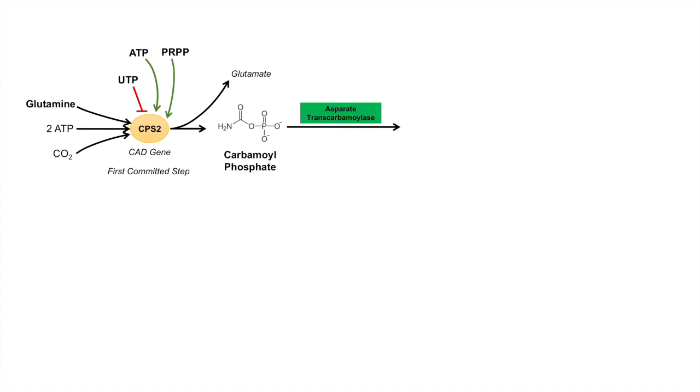Once you've got carbamoyl phosphate, it gets converted to carbamoyl aspartate by the enzyme aspartate transcarbamoylase, and it actually adds aspartate to the carbamoyl phosphate to produce carbamoyl aspartate. Once you get carbamoyl aspartate, it goes through a couple of steps, including through an enzymatic reaction utilizing dihydroorotate dehydrogenase to produce orotic acid.